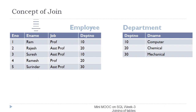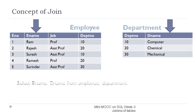Let us retrieve the ename and dename columns from the employee and department tables. Here, ename is present in the employee table while dename is present in the department table. We have to retrieve information from two tables, so the corresponding SELECT statement will be: SELECT ename, dename FROM employee, department.